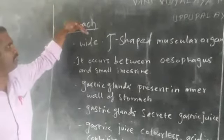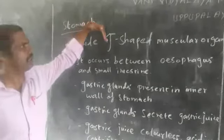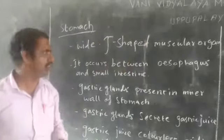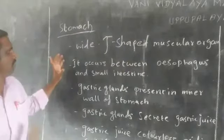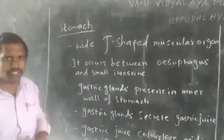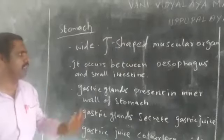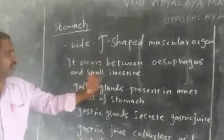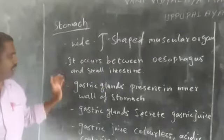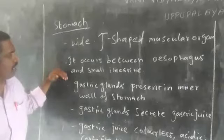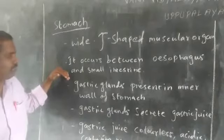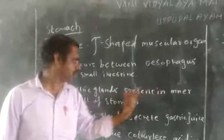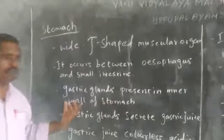Stomach is a wide J-shaped muscular organ that is present in our abdominal cavity. It occurs between the esophagus and the small intestine. Inside the stomach, there are different types of gastric glands present in the inner wall of the stomach.